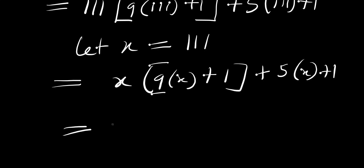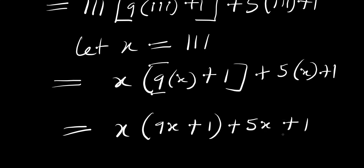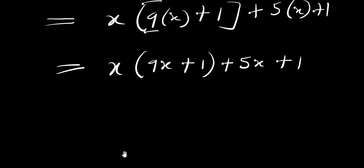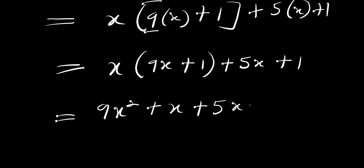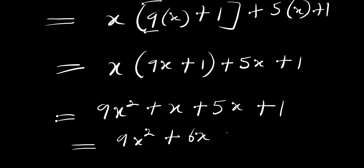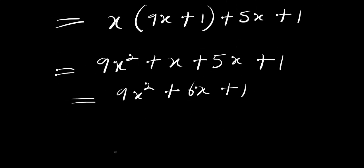Expanding this, we have x times (9x plus 1) plus 5x plus 5 plus 1, which gives us 9x squared plus x plus 5x plus 1, and combining like terms: 9x squared plus 6x plus 1.